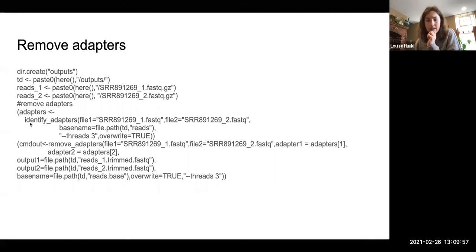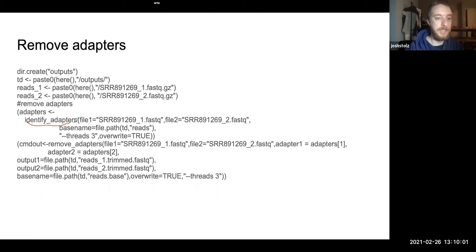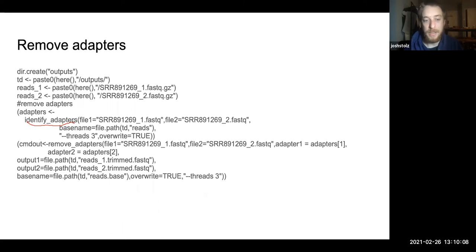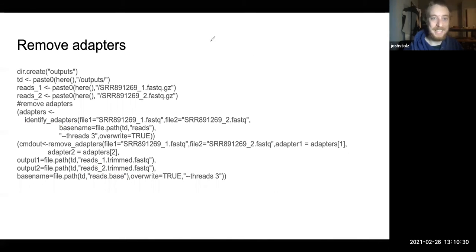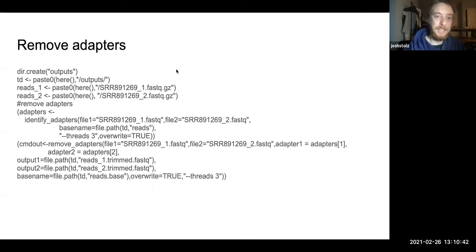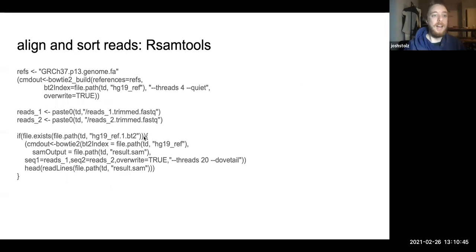The identify adapters function is looking for a common nucleotide sequence at the beginning of each read, and that sequence is then identified to be removed. The read-one trimmed FASTQ outputs are then written out.